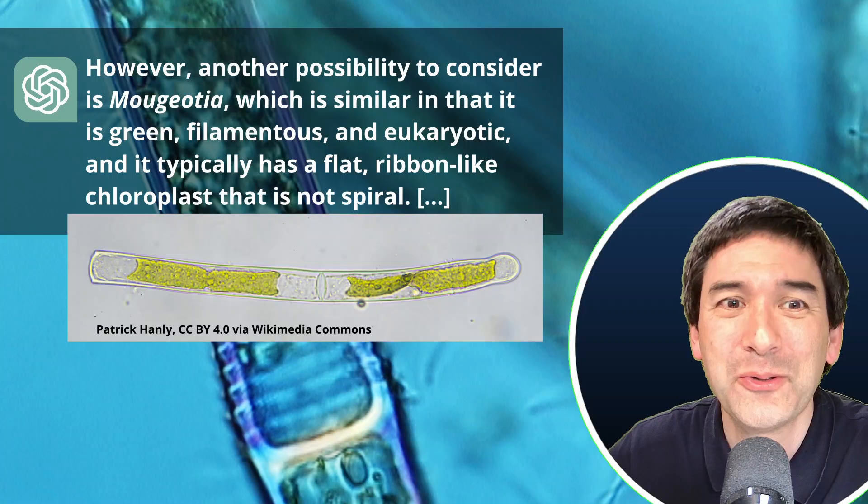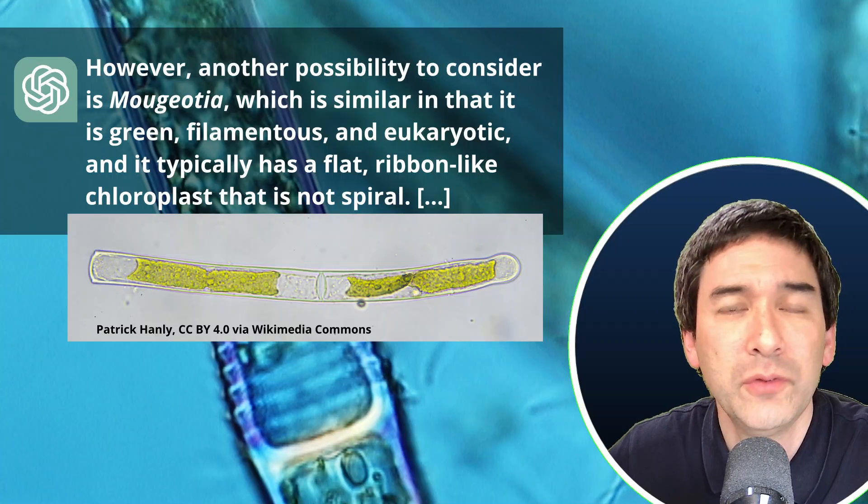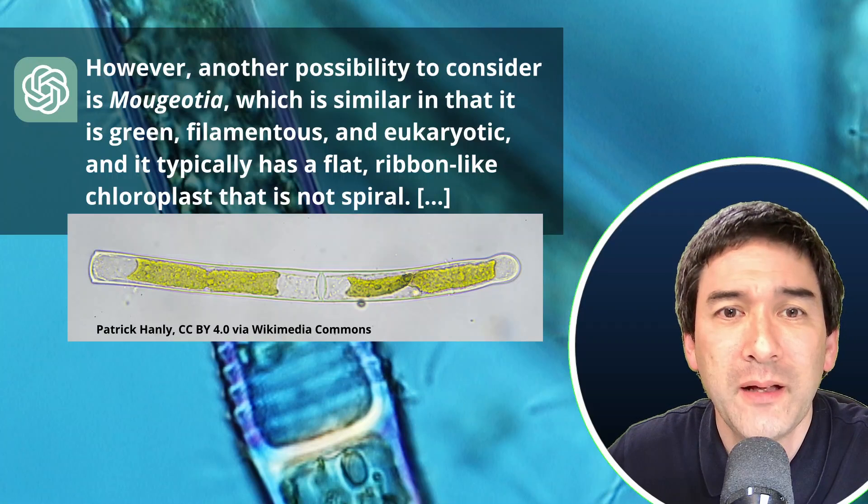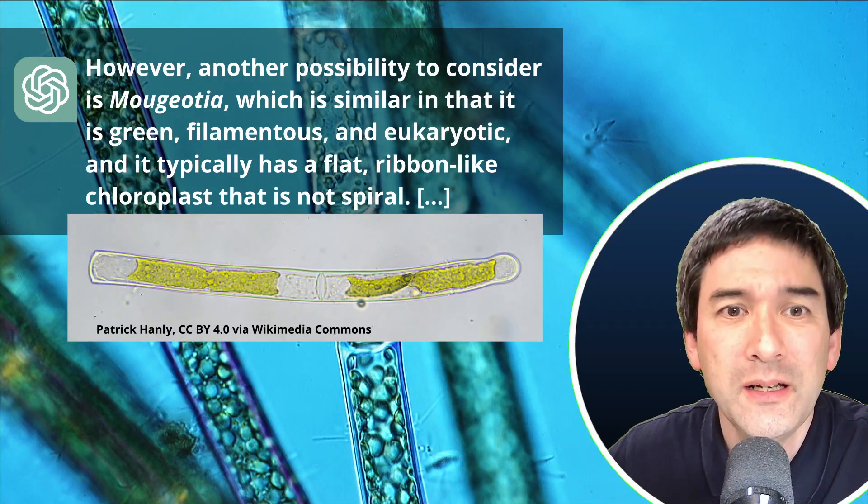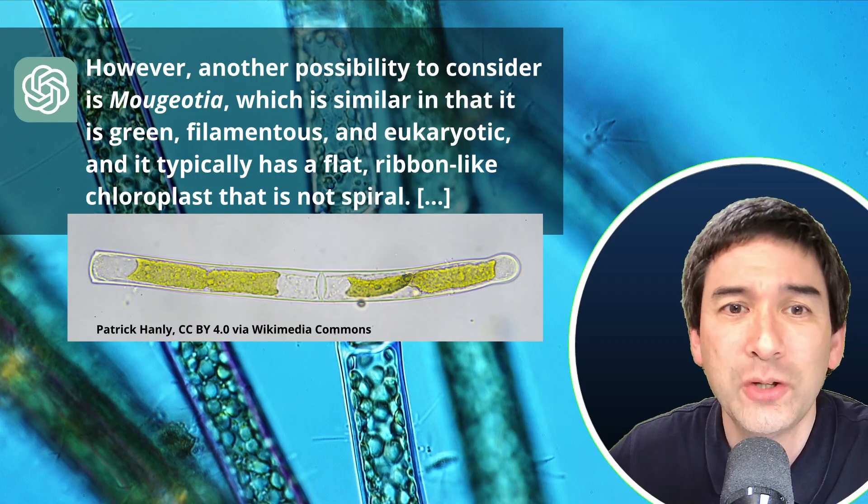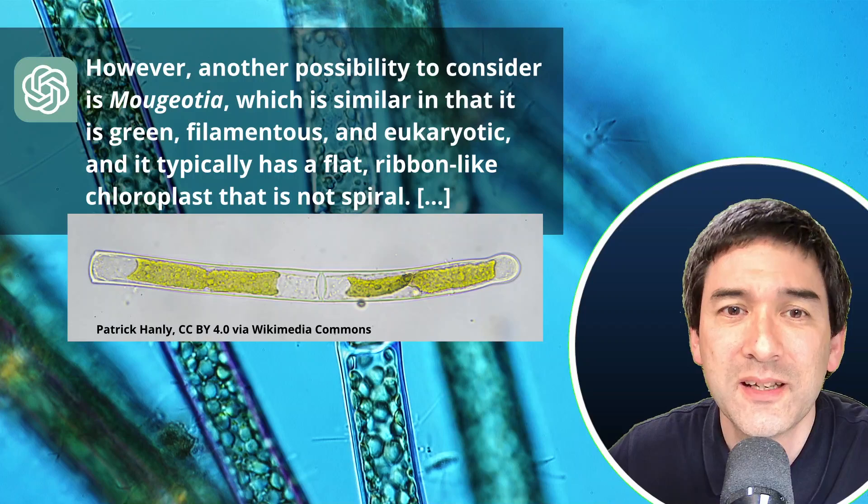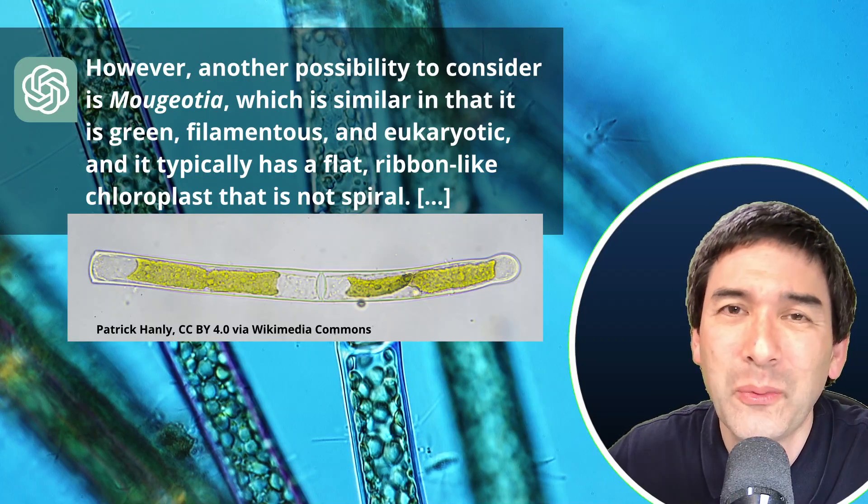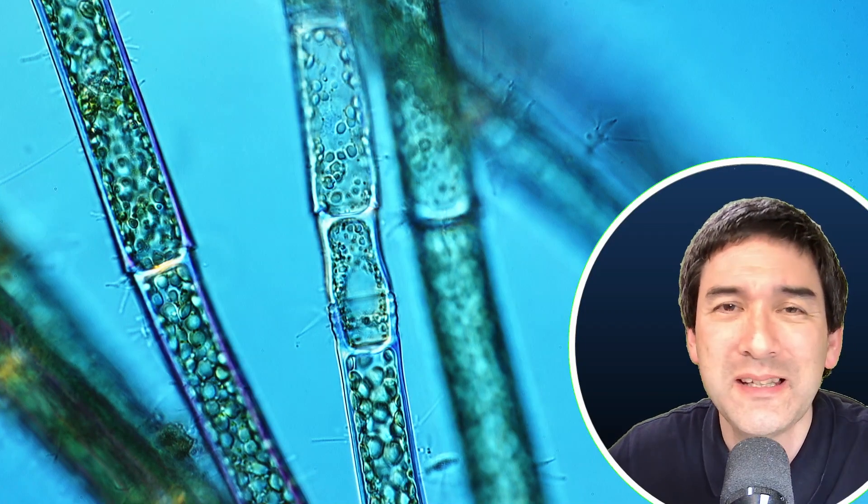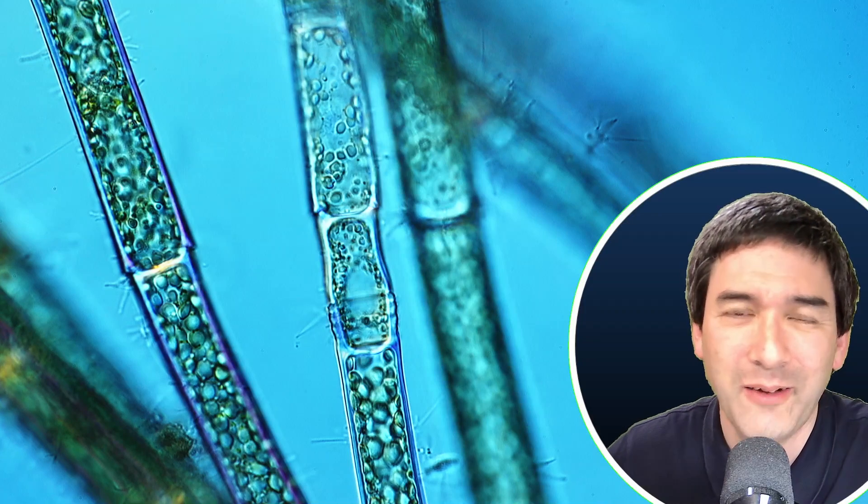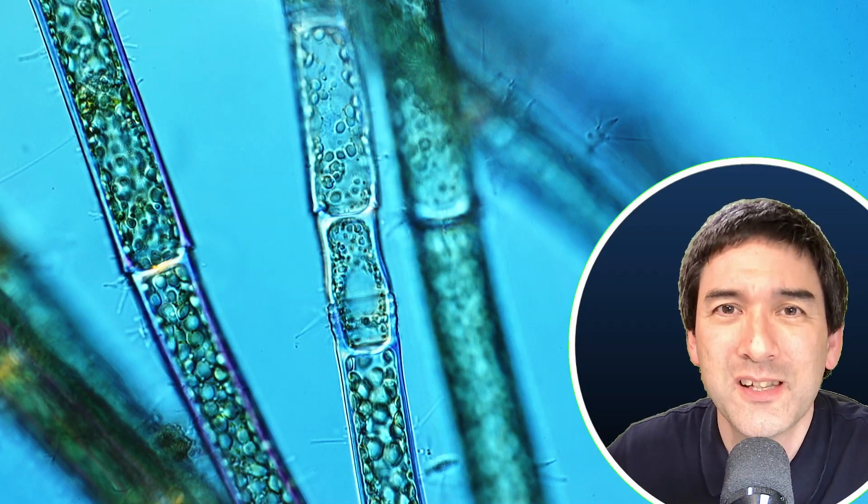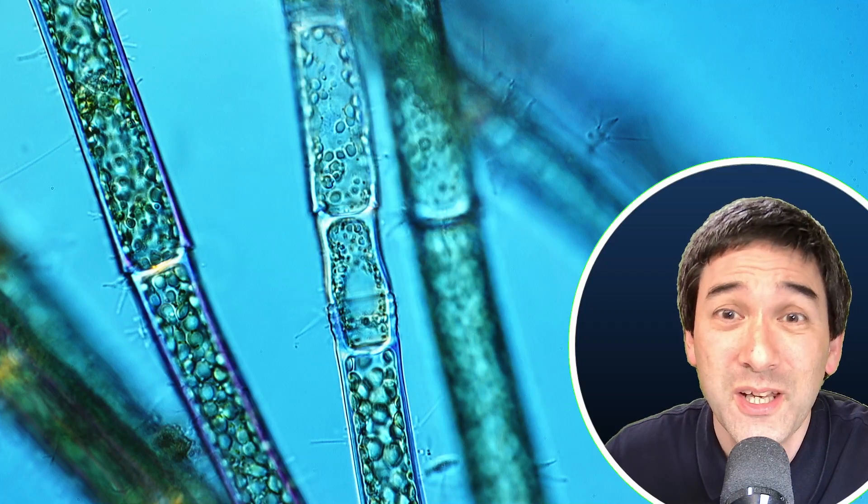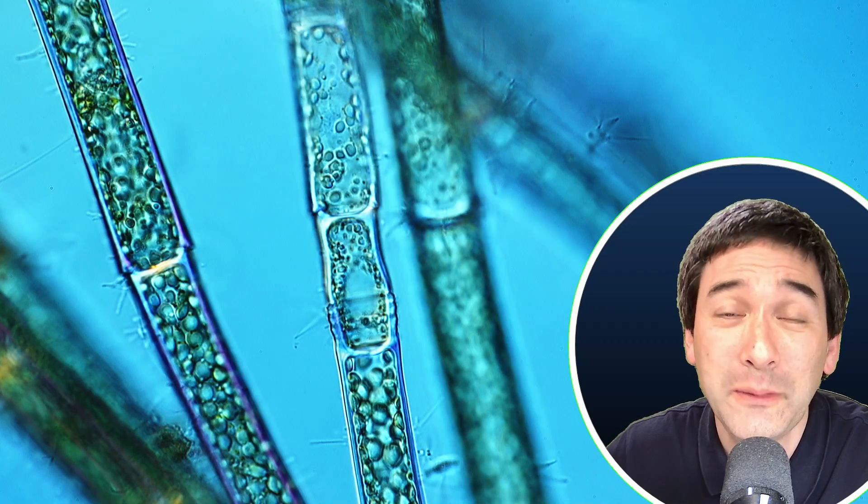However, another possibility to consider is Mougeotia, which is similar in that it is green. Oh, come on. Of course it's green. Filamentous and eukaryotic and typically has a flat ribbon-like chloroplast that is not spiral. It simply keeps on going very generic and keeps on listing a whole bunch of algae. But it completely ignored the special characteristic, those ring-shaped thickenings, completely ignored that.